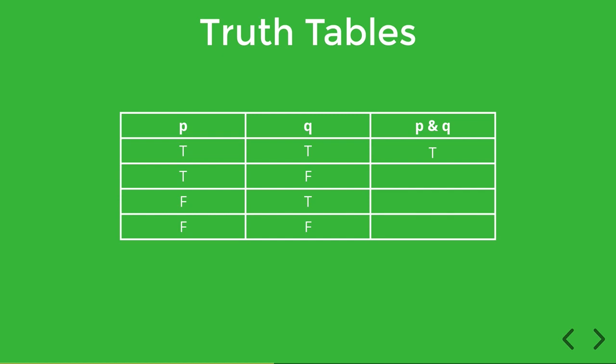In the second row, P is true and Q is false, so only one of them is true. In that case, the conjunction is going to be false. Since conjunction requires both conjuncts to be true, if even one of them is false, that suffices to make the conjunction false. So we put F in row two.